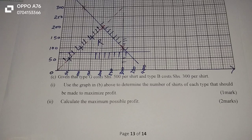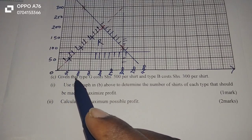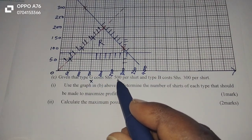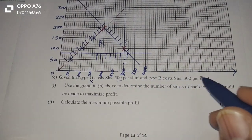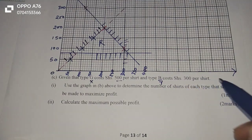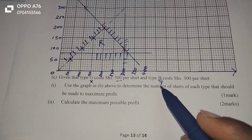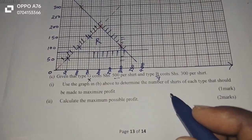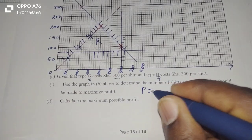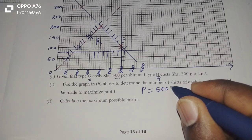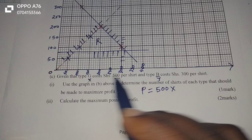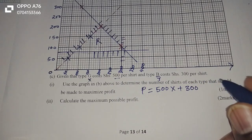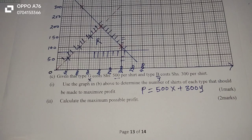Now we continue to Part C. Given that type G costs 500 per shirt and type B costs 300 per shirt, use the graph to determine the number of shirts of each type that should be made to maximize profit — this is called optimization. The first thing is to obtain the objective function: P equals 500X plus 300Y.